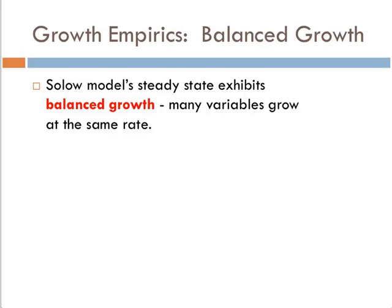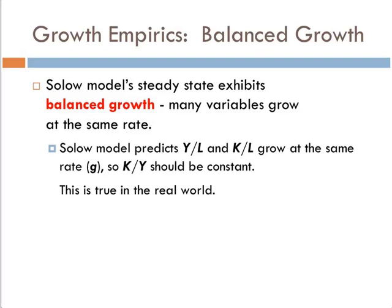The first thing we see is that the Solow growth model exhibits what we called balanced growth amongst many variables. This is an important concept. We use this idea of balanced growth sometimes to solve more complicated problems — sometimes growth models are so complicated we need a way to cheat in order to solve them, and one way we do that is through the idea of a balanced growth path. Basically, variables grow at the same rate.